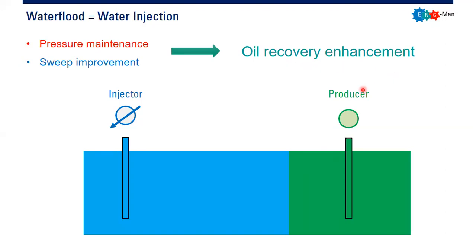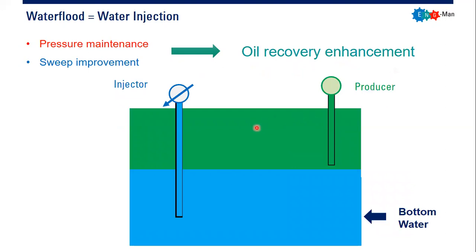Combining these two factors — sweep improvement and pressure maintenance — you get oil recovery enhancement. And if you do pressure maintenance by injecting water, yes you are maintaining reservoir pressure, but of course you will also push oil to some degree toward producers, giving you oil recovery enhancement. Whether you inject water into the reservoir or into the bottom water, you still get both effects: pressure maintenance and sweep improvement. The conclusion is that water flood is water injection and water injection is water flood — you cannot separate or isolate these two factors. You maintain the pressure, you improve the sweep, and you get oil recovery enhancement.